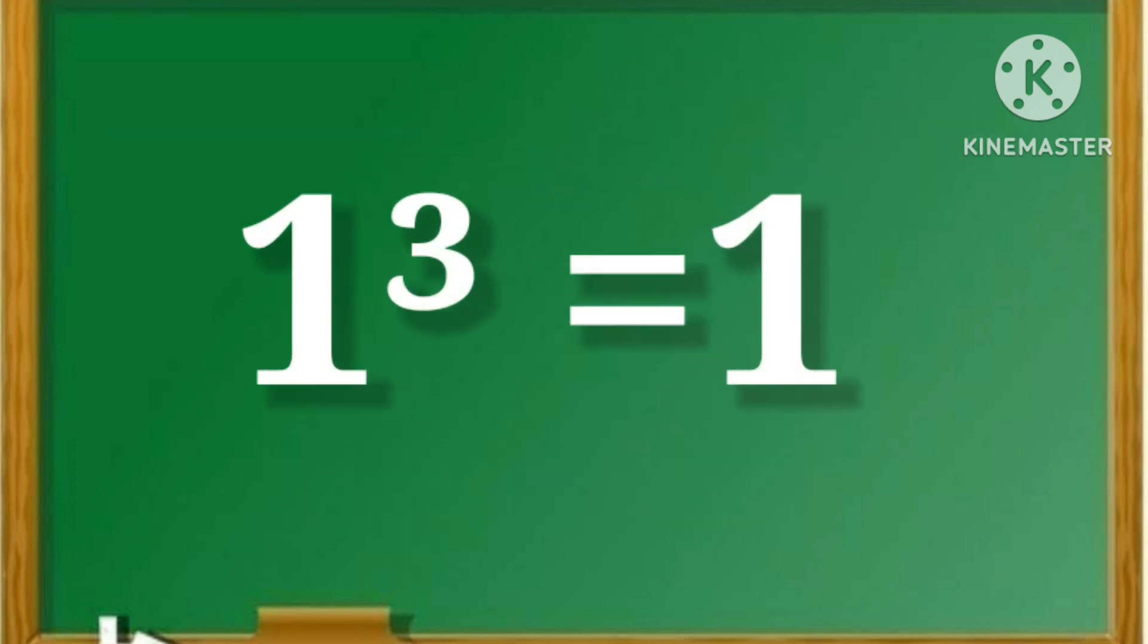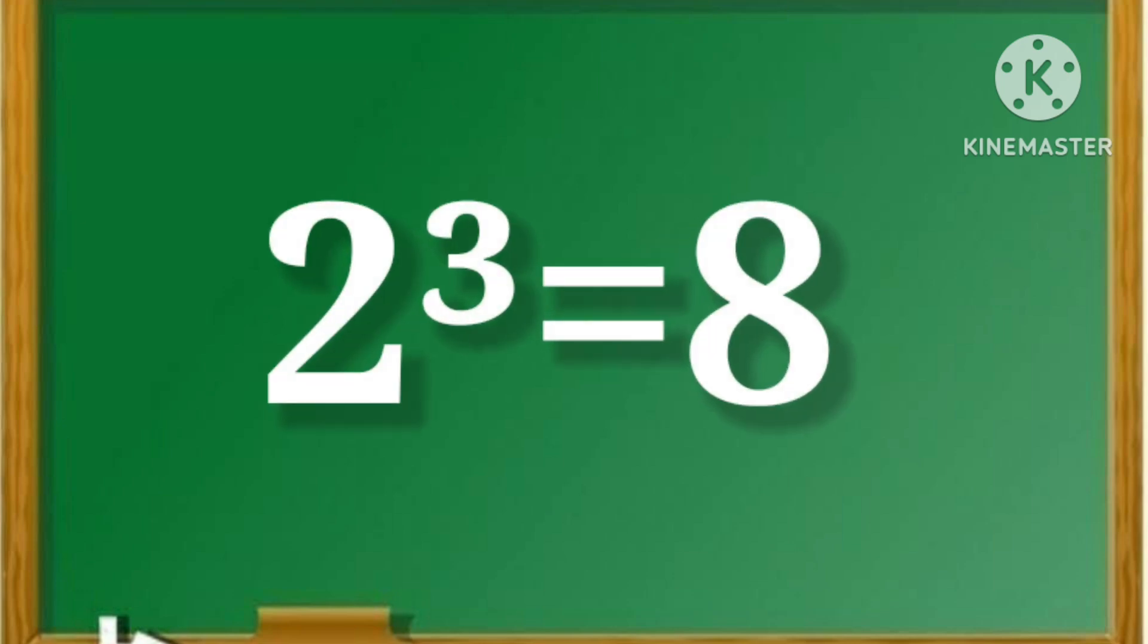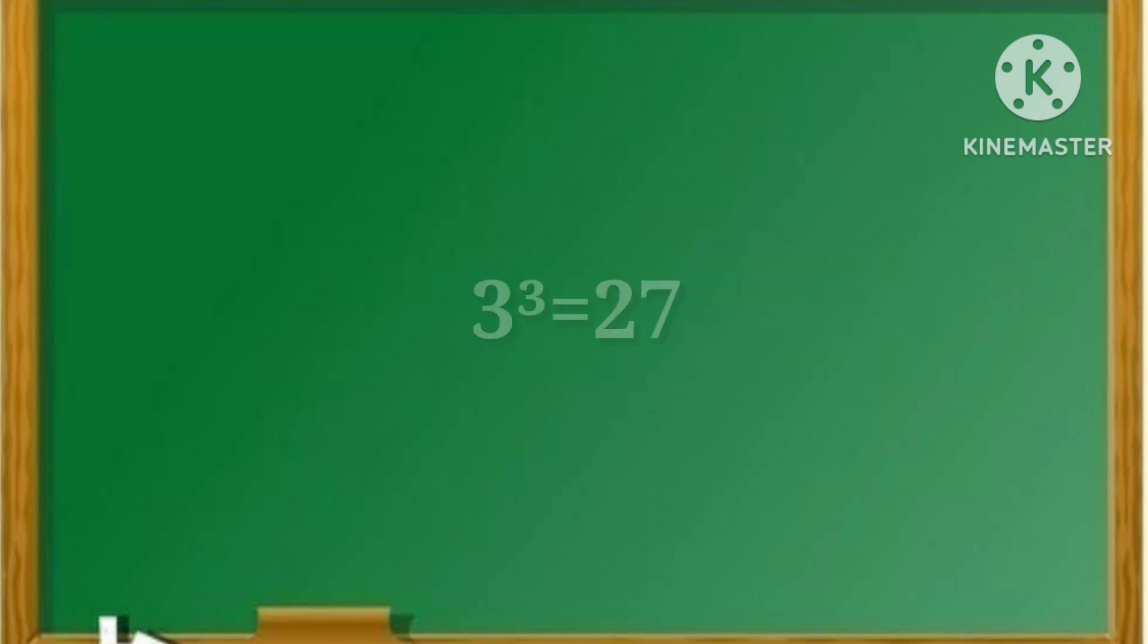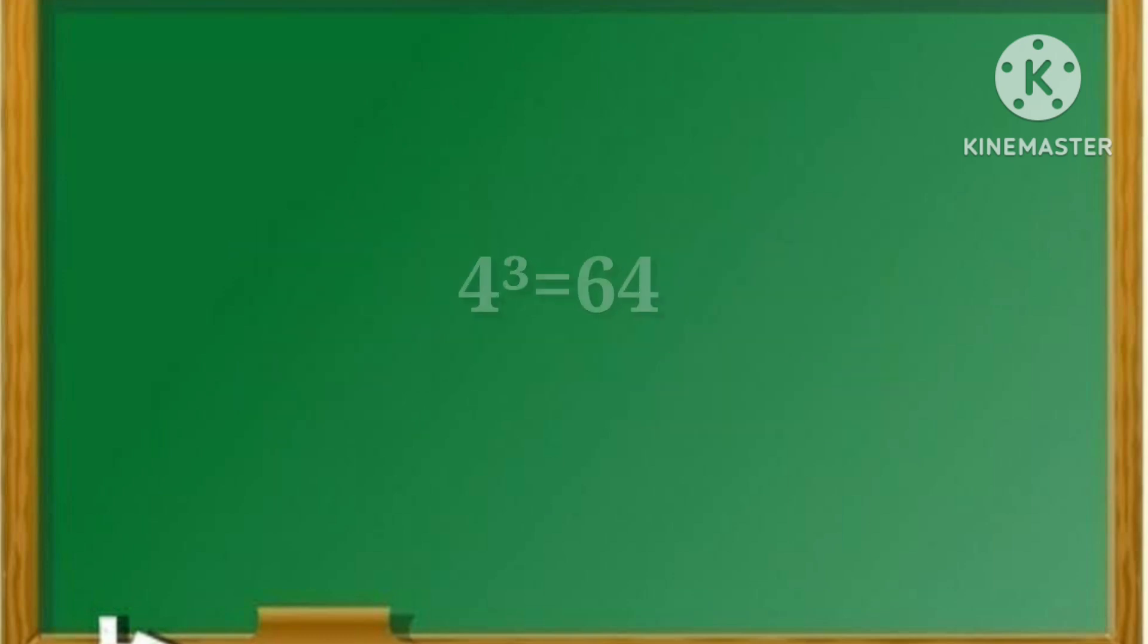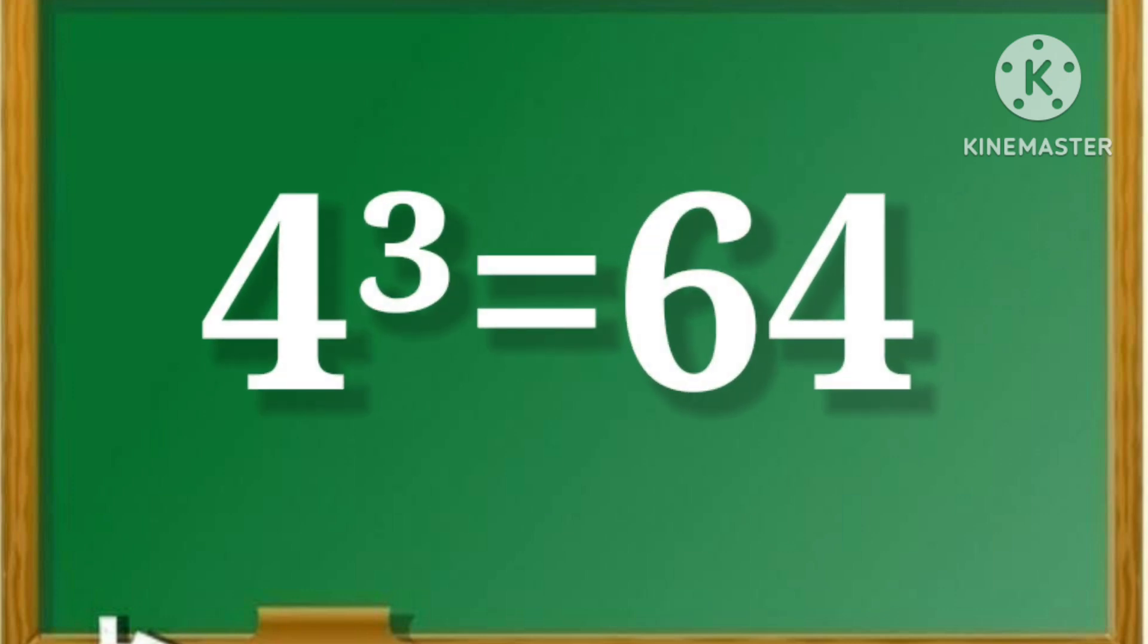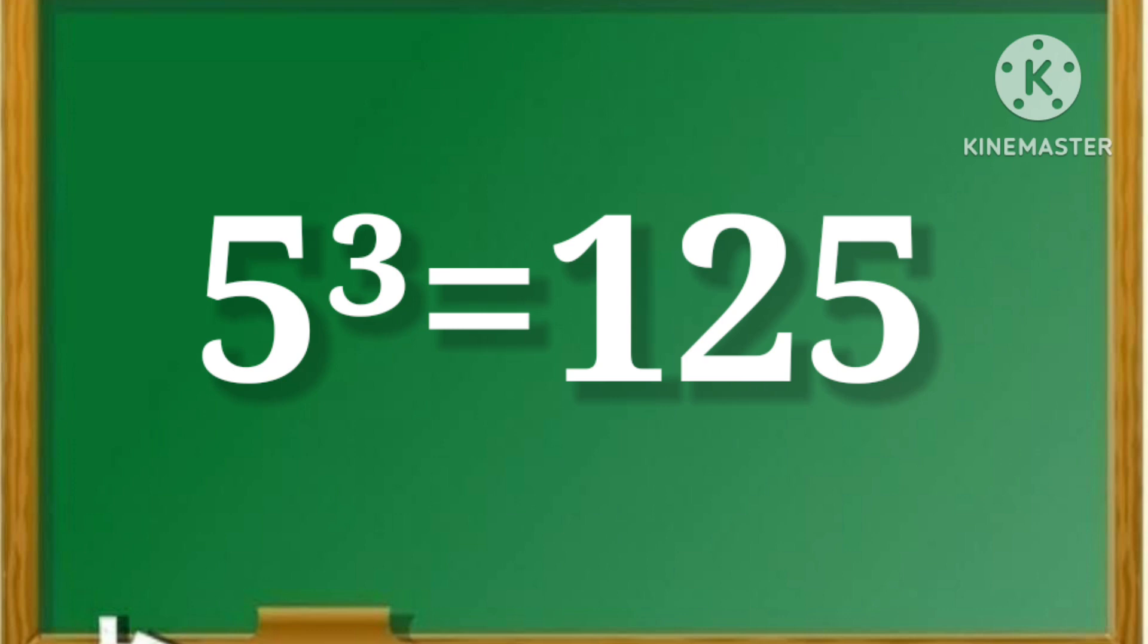1 cube is equal to 1. 2 cube is equal to 8. 3 cube is equal to 27. 4 cube is equal to 64. 5 cube is equal to 125.